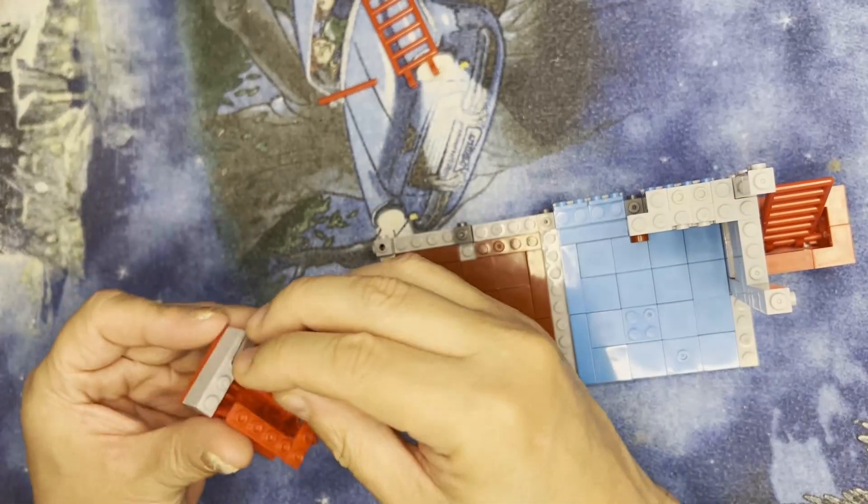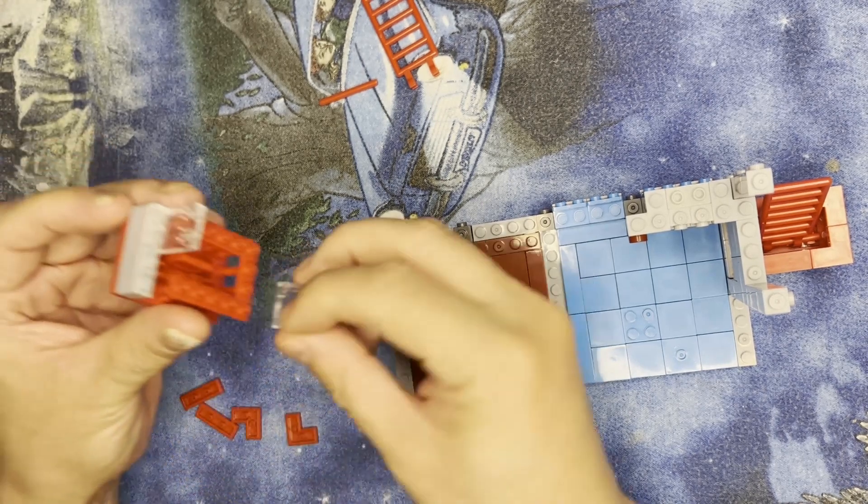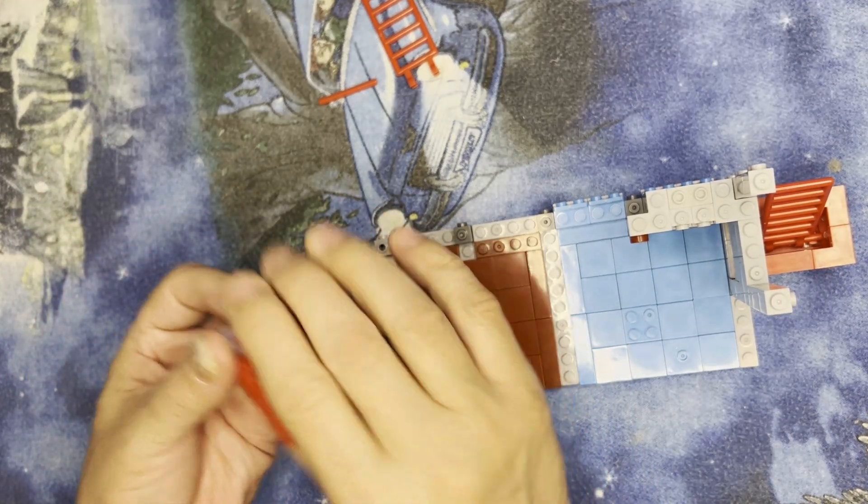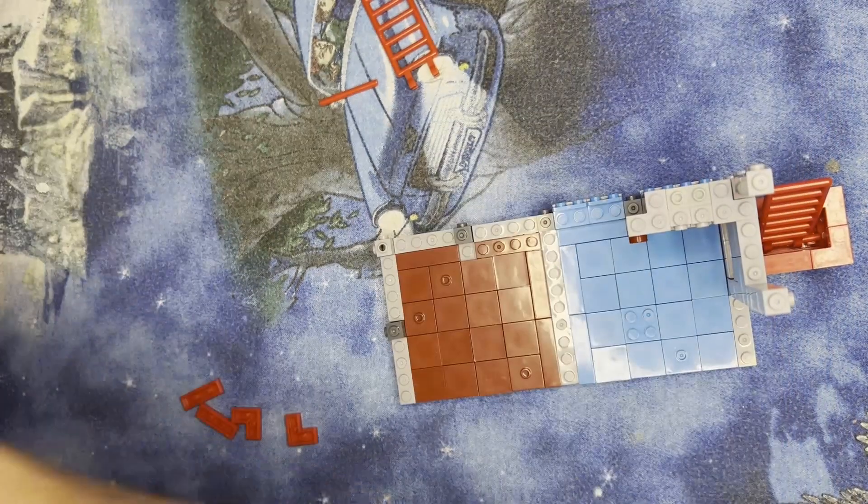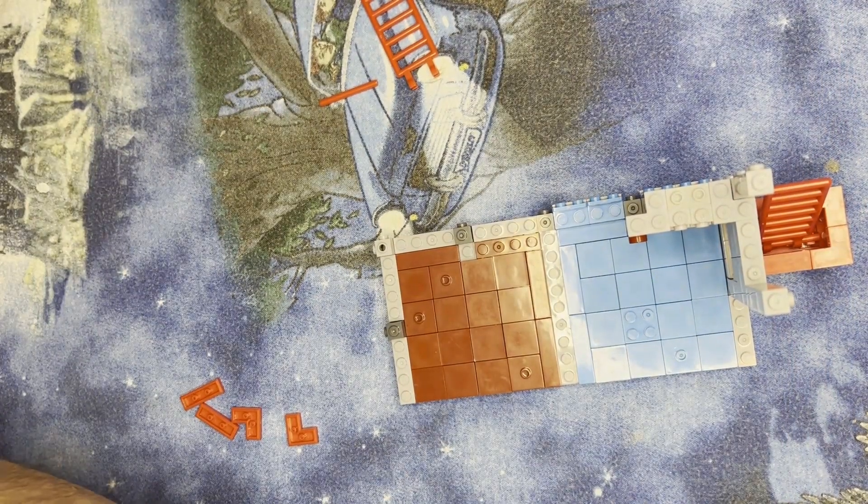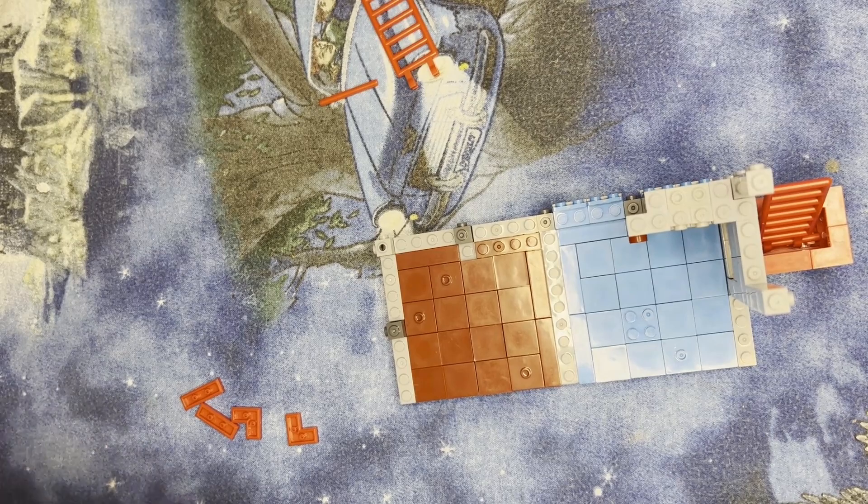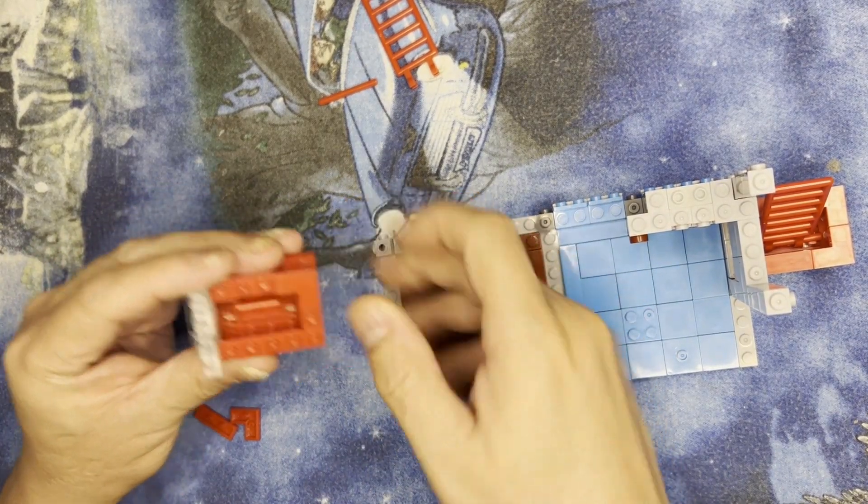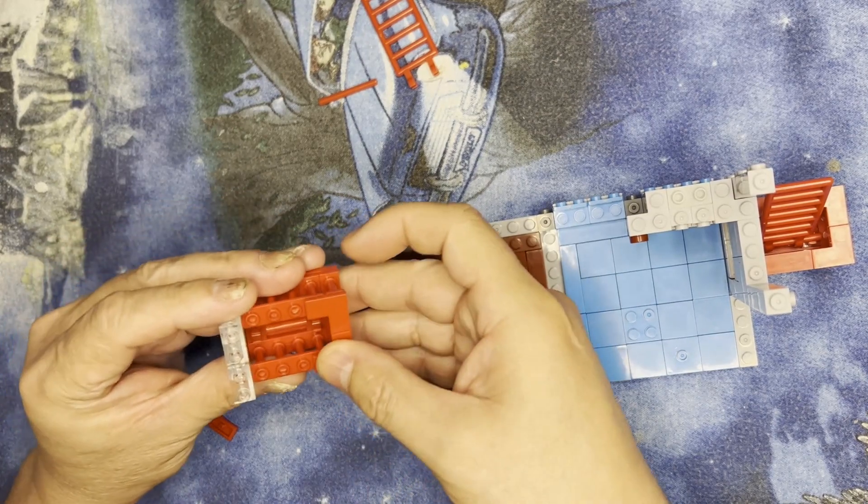So then we're going to put these windows in here like this. I'm going to have something to hold this place. There we go. Alright. Put this here. Put this corner piece here.